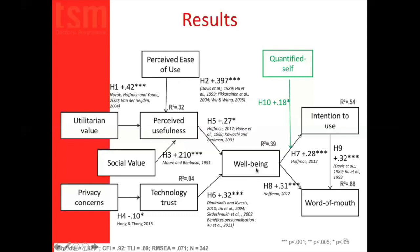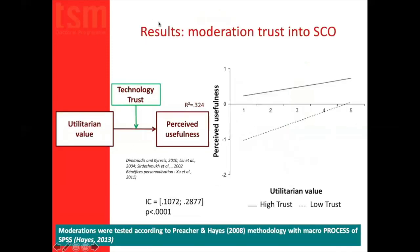We furthermore confirm that well-being is a mediating variable because the higher the well-being, the higher the impact on intention to use. This impact is highly moderated by the quantified self — the more people are concerned with monitoring their life with smart connected objects, the higher will be the impact of well-being on intention of use. Well-being also has a direct positive and highly significant impact on recommendations and word of mouth. We confirm a positive highly significant relationship between intention to use and word of mouth. We also see that technology trust is a moderator between utilitarian value and perceived usefulness — if we have high trust, perceived usefulness is higher.